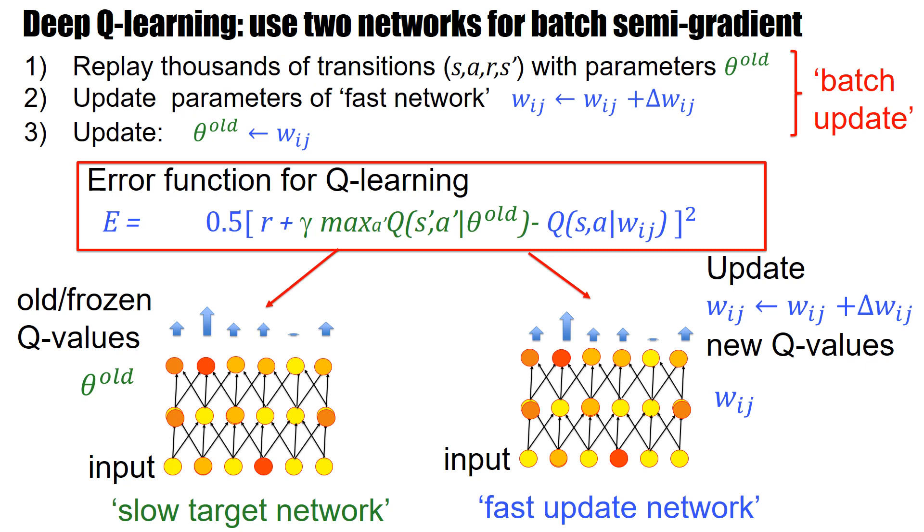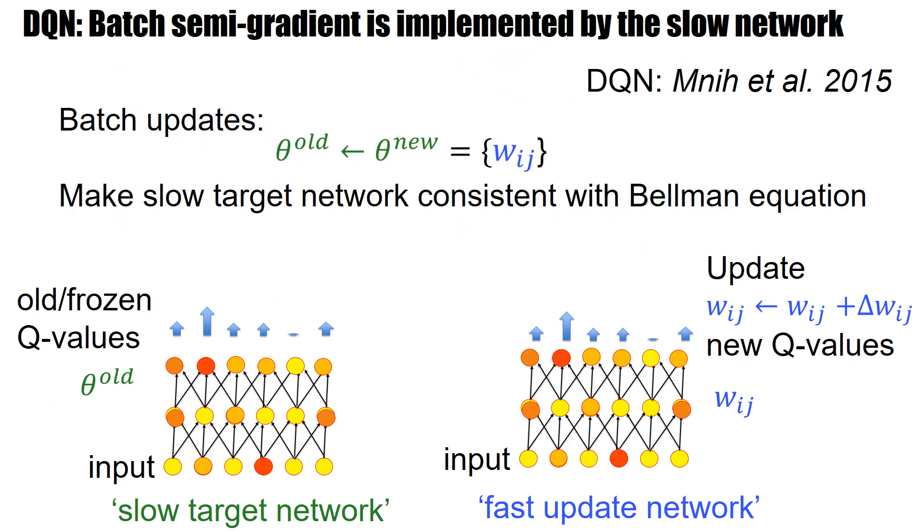So let me summarize. We replay thousands of transitions. These thousands of transitions form a batch. And in the end, we update the parameters of the slow network. We do a batch update with semi-gradient. So the batch update is an update of this set of parameters in the slow network. And over many iterations, this will make the slow target network consistent with the Bellman equation. And this is the idea that's implemented in the paper by Mnih et al.